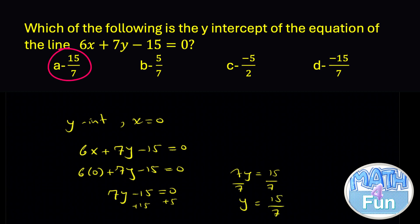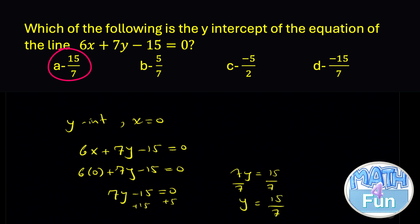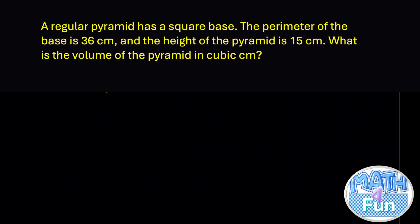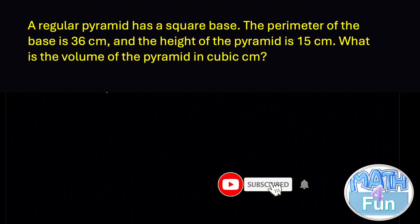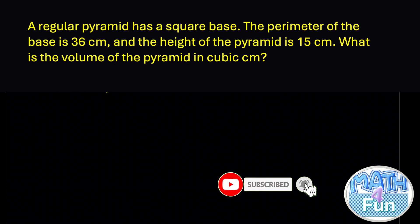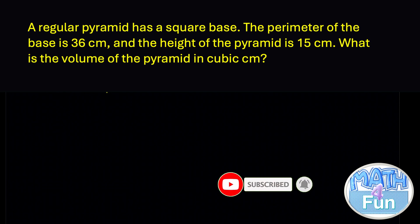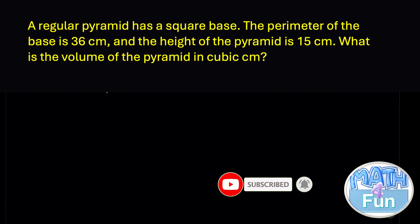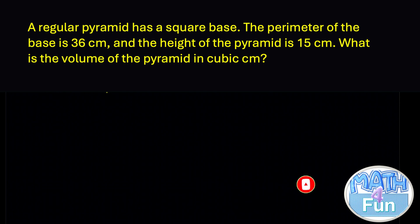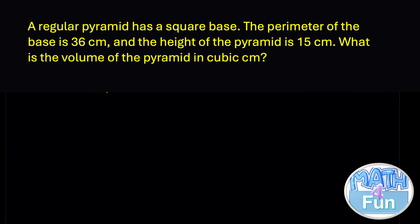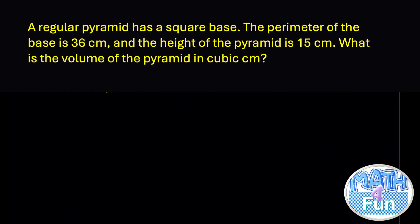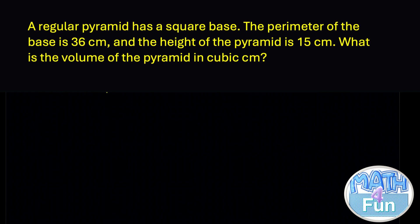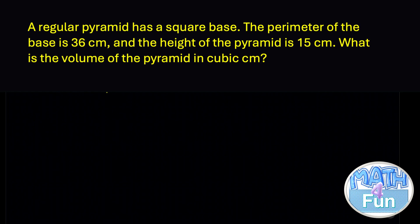So answer choice A, 15/7, is correct. Next question: a regular pyramid has a square base. The perimeter of the base is 36 cm and the height of the pyramid is 15 cm. What is the volume of the pyramid in cubic centimeters?